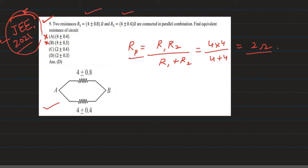So since Rp value we get 2 ohms, this is why option A and option B are clearly cancelled. We just have to work on option C and option D.